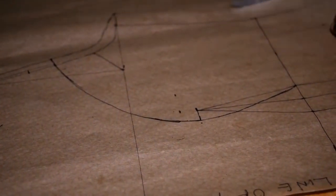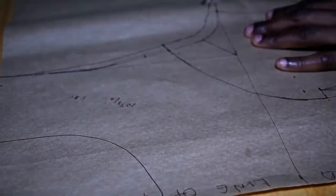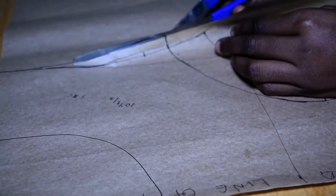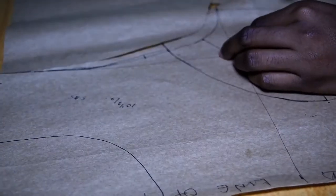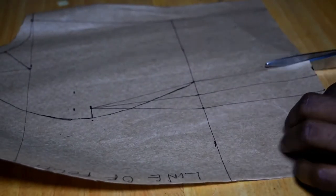For princess seam, you need to cut your dart out and join it back. That's the reason for those extra allowances I was giving.